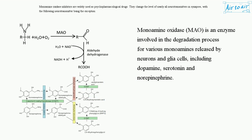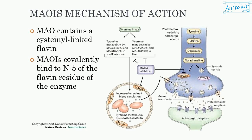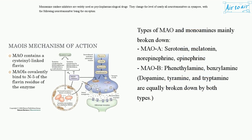Monoamine oxidase (MAO) is an enzyme involved in the degradation process for various monoamines released by neurons and glial cells, including dopamine, serotonin, and norepinephrine. Types of MAO and monoamines mainly broken down: MAO-A breaks down serotonin, melatonin, norepinephrine, and epinephrine. MAO-B breaks down phenethylamine, benzylamine, and dopamine. Tyramine and tryptamine are equally broken down by both types.